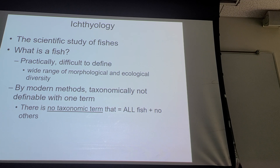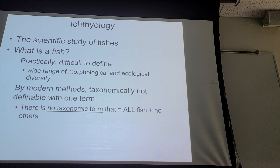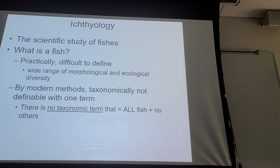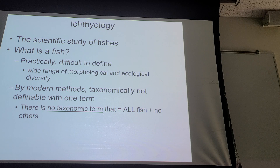There is a taxon that equates to what we call birds — Aves — and that is a taxon that equals birds. There's also a taxon that equals what we call mammals: Mammalia. That's the taxon that equals what we generally call mammals.